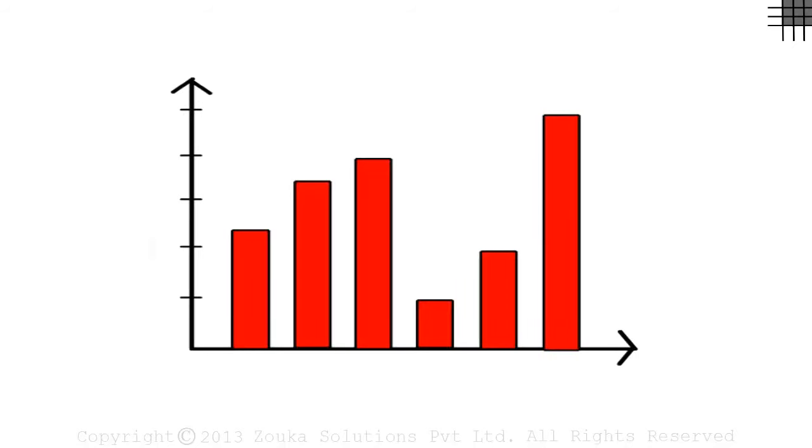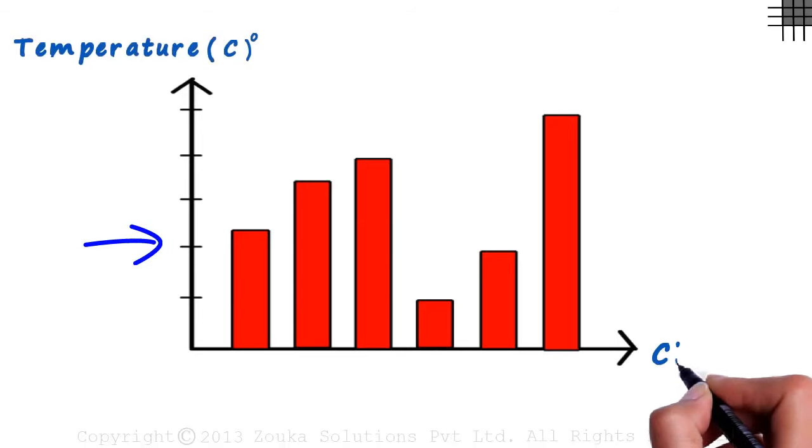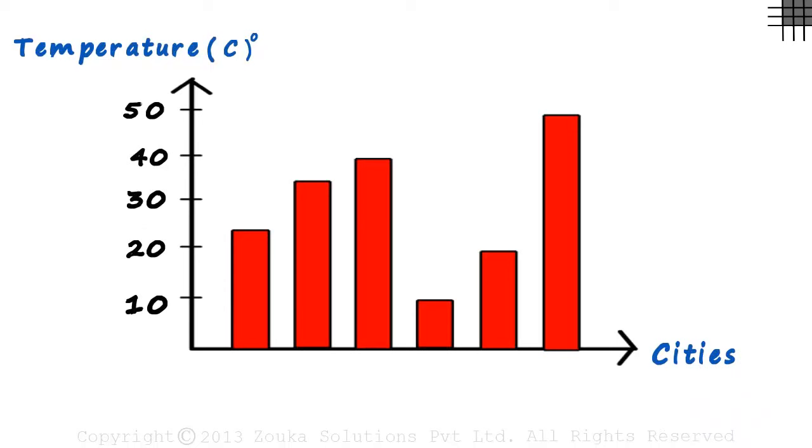Let's see a practical example where the bar graph can be used to understand data more easily. This is a graph of average temperature of various cities. In this graph, we mark 10 degrees in equal intervals, and we have been given data for six cities.